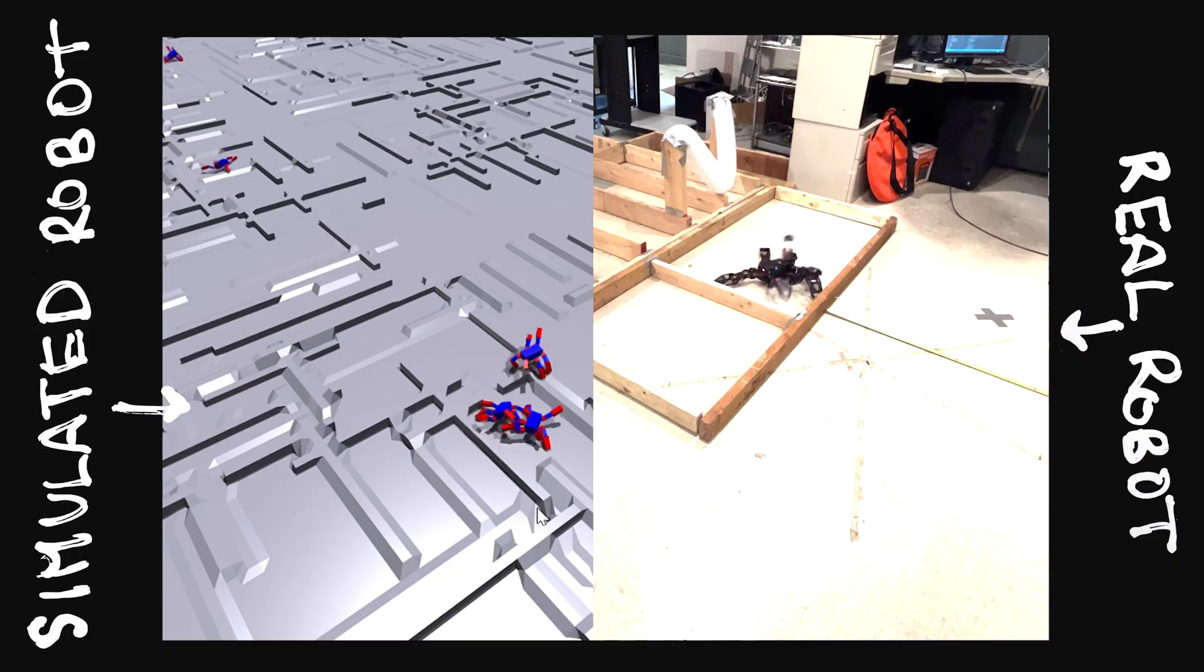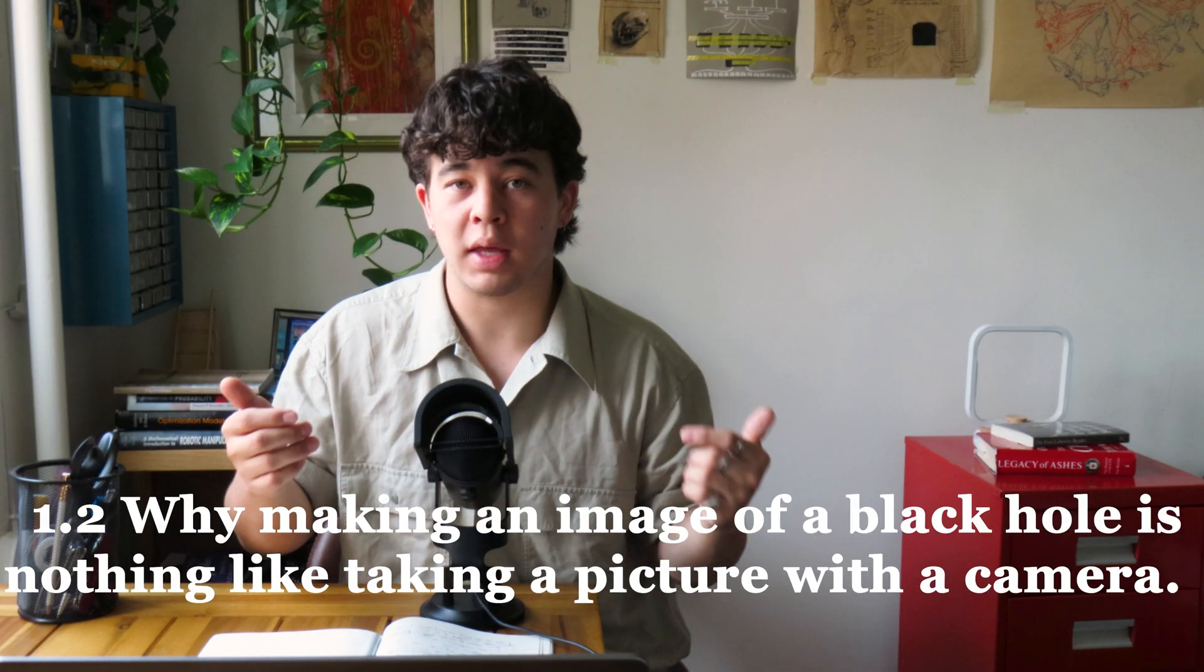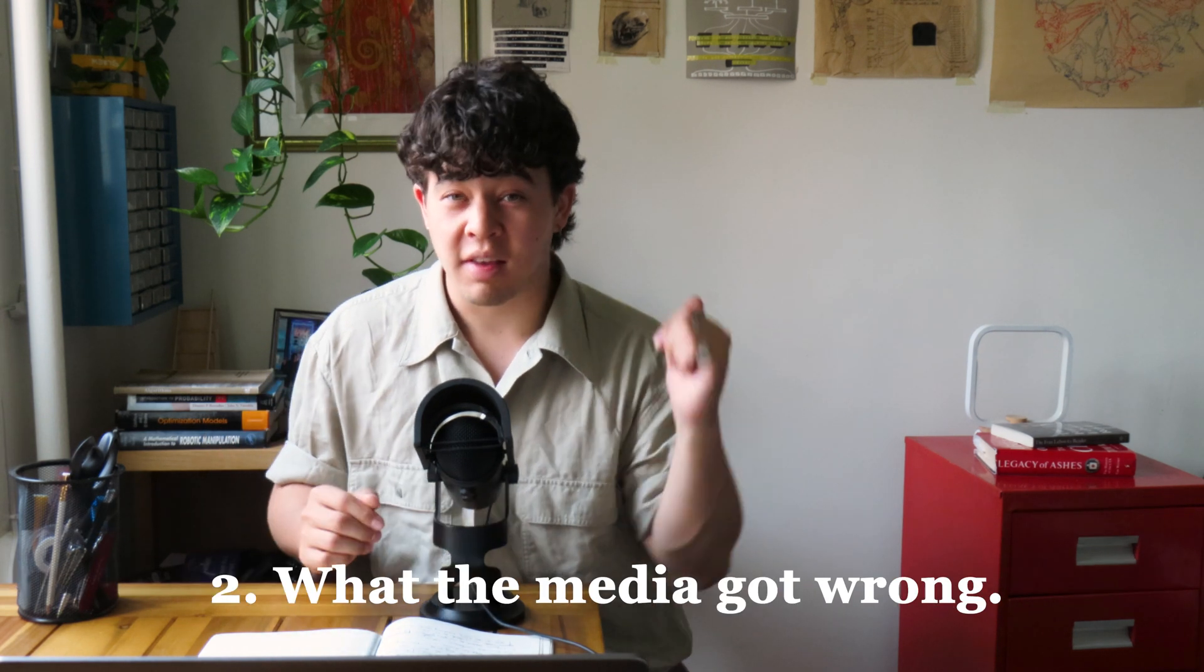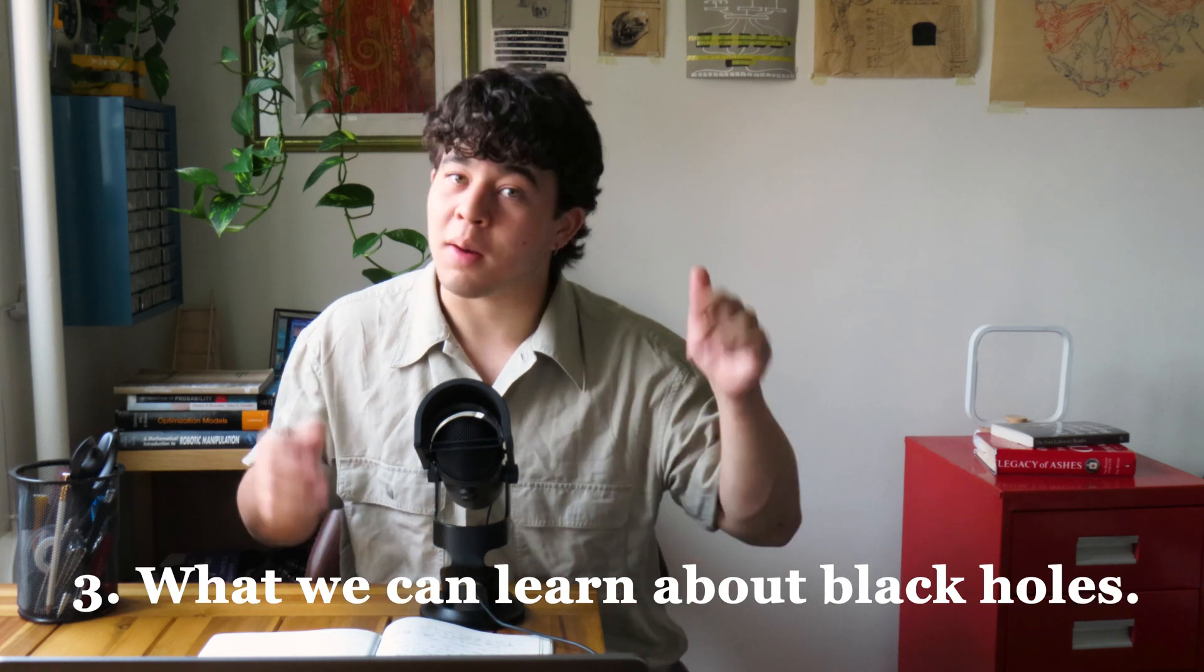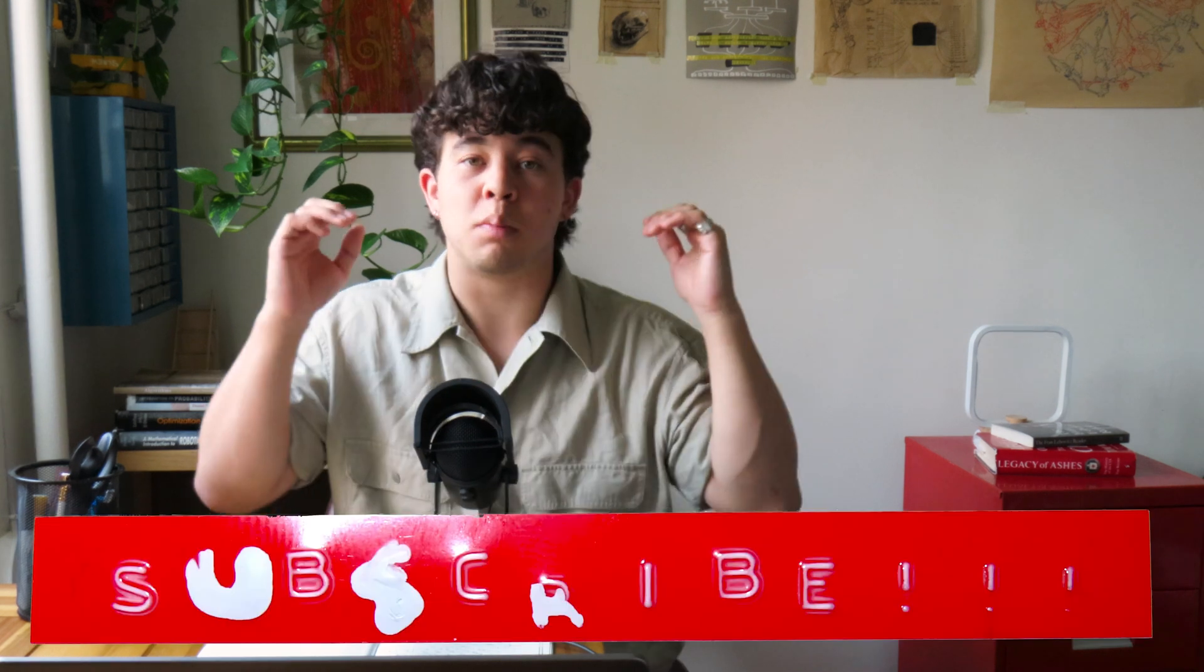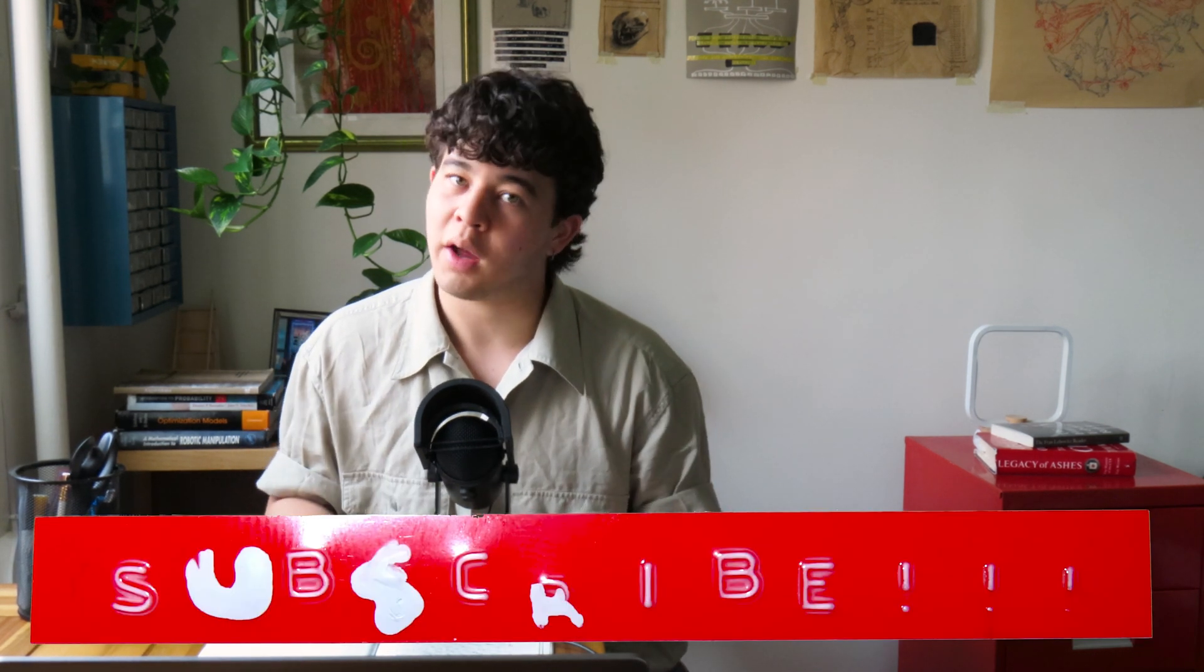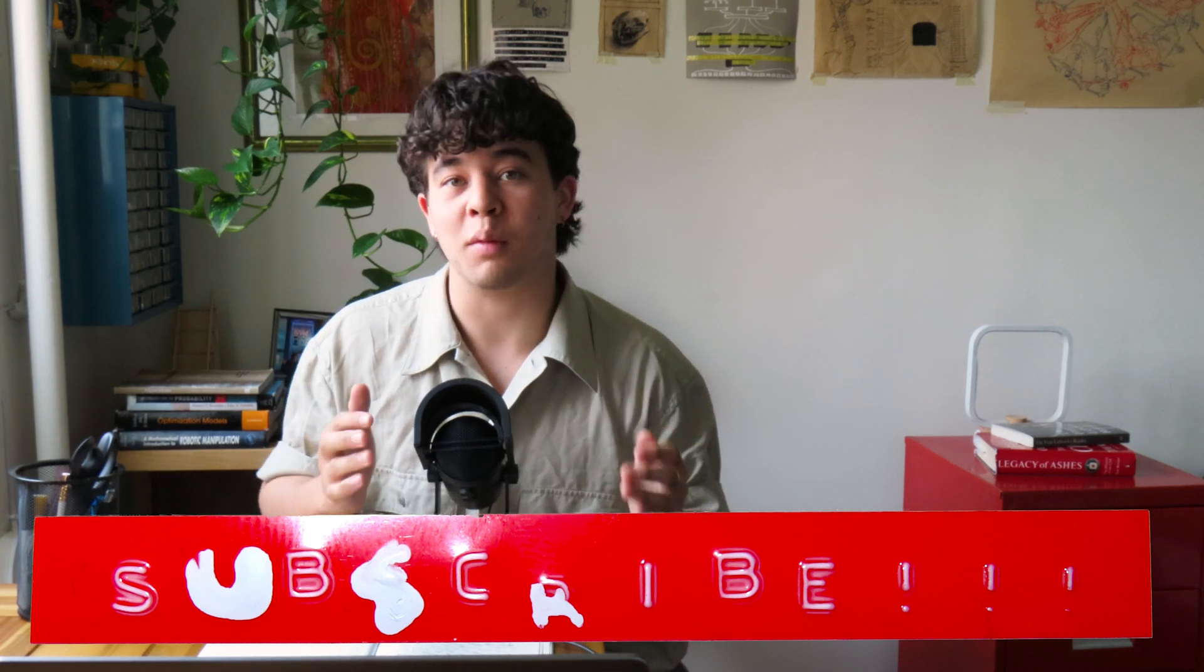So this video is going to have three parts. First, how this black hole image was actually created, and why making an image of a black hole isn't anything like taking a picture with your camera. Second, what the New York Times and other media outlets got wrong. And third, and most importantly, what we can learn from this image about black holes. Before I get into it, please subscribe if you haven't already to support this work. I know there are a lot of new people here, and I want to thank you all for joining me. I really appreciate the support.